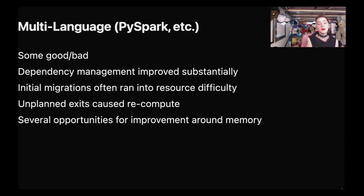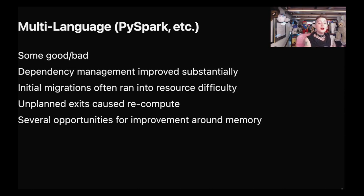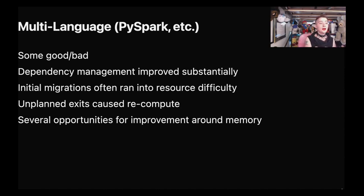Multi-language jobs are where things started to get a little challenging. One of the really great things is that dependency management improved substantially compared to YARN. In the YARN world, all dependencies had to be managed by a systems administrator, whereas with Kube it could be very much more self-serve. The initial migrations often ran into resource difficulty, and unplanned exits caused large amounts of recomputation — more than the amount we were seeing running these jobs in other cluster environments. Most opportunities for improvement are around memory allocation, specifically how we share native and JVM memory.